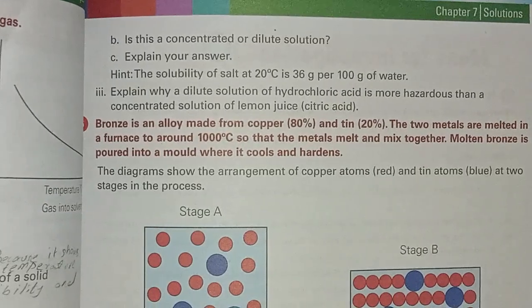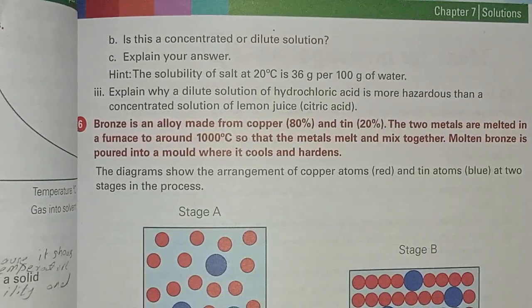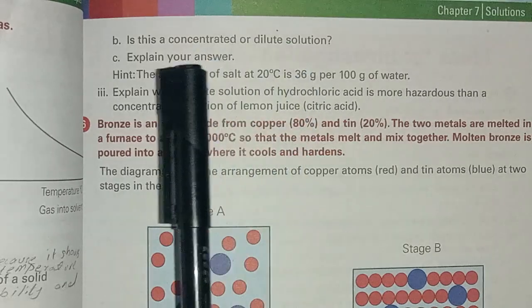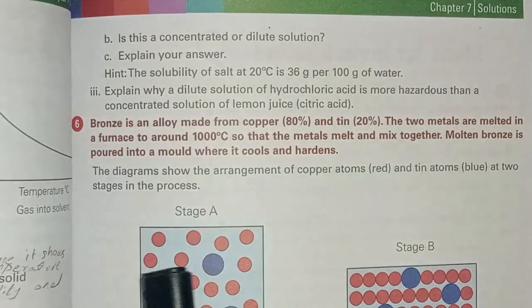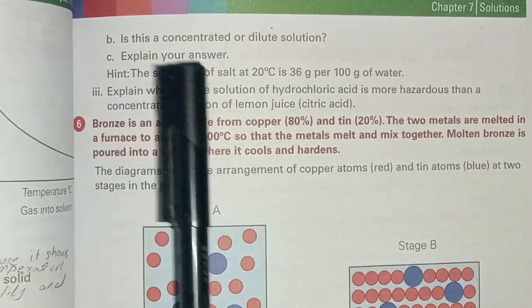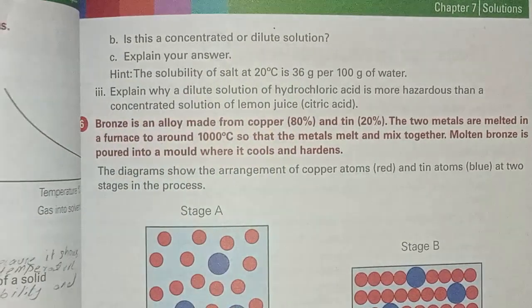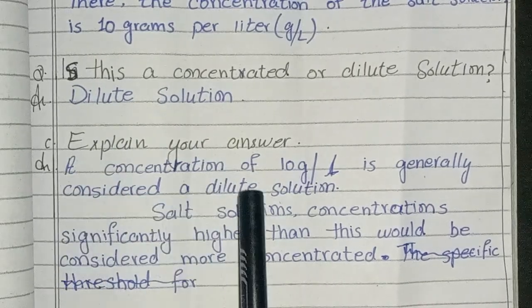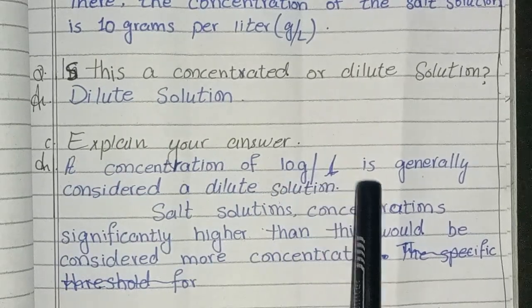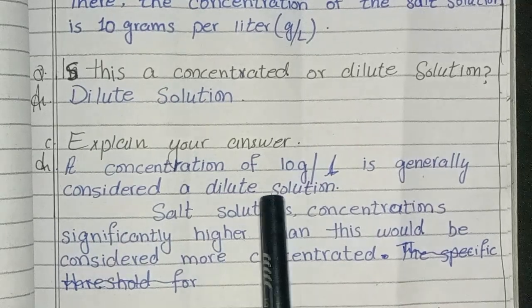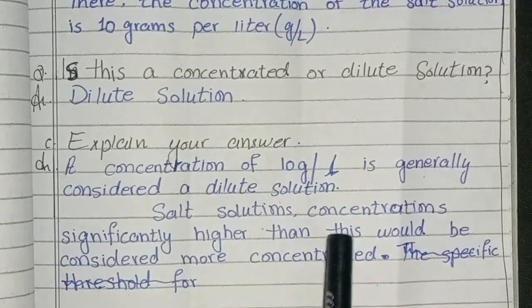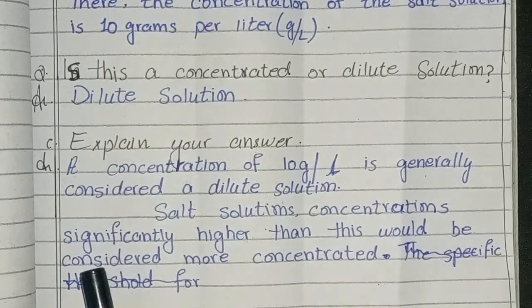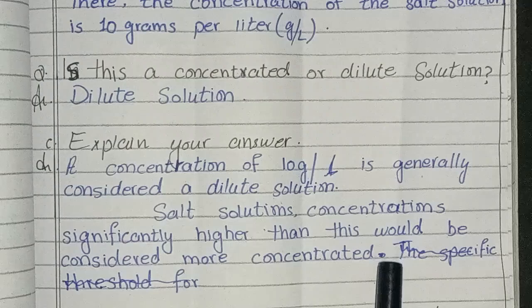Next page, page number 103. Next question: is this a concentrated or dilute solution? Explain your answer. Answer: dilute solution. Explanation: a concentration of 10 gram per liter is generally considered a dilute solution. Salt solutions with concentrations significantly higher than this would be considered more concentrated.